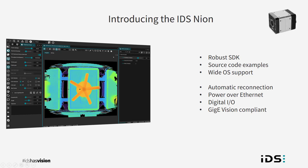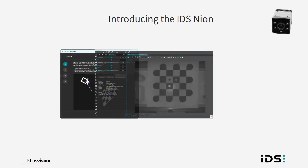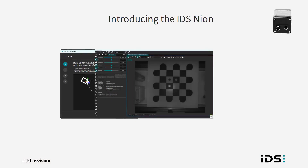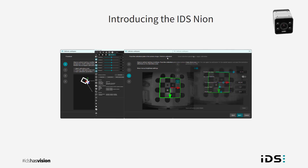The Nyon is also GigE Vision compliant, which means it is directly compatible with third-party libraries that also support this standard. It is fully integrated into IDS Peak Cockpit with capture and display of height map and point cloud data, and the point cloud can also be stored as a PLY file for use by other 3D programs. With IDS Peak it's also possible to perform a workspace calibration and transform the coordinate system for an off-axis angle of view, either programmatically or via the Peak Cockpit, transforming from camera coordinates to real-world coordinates.